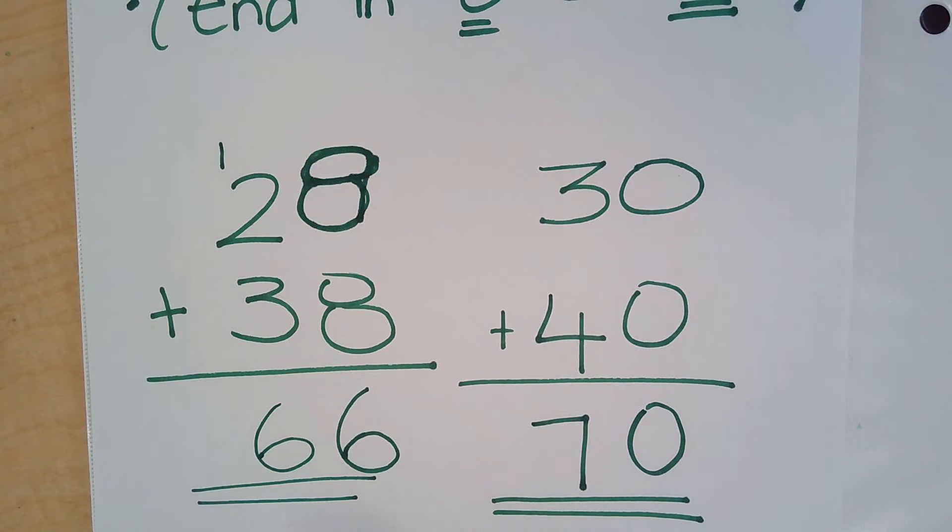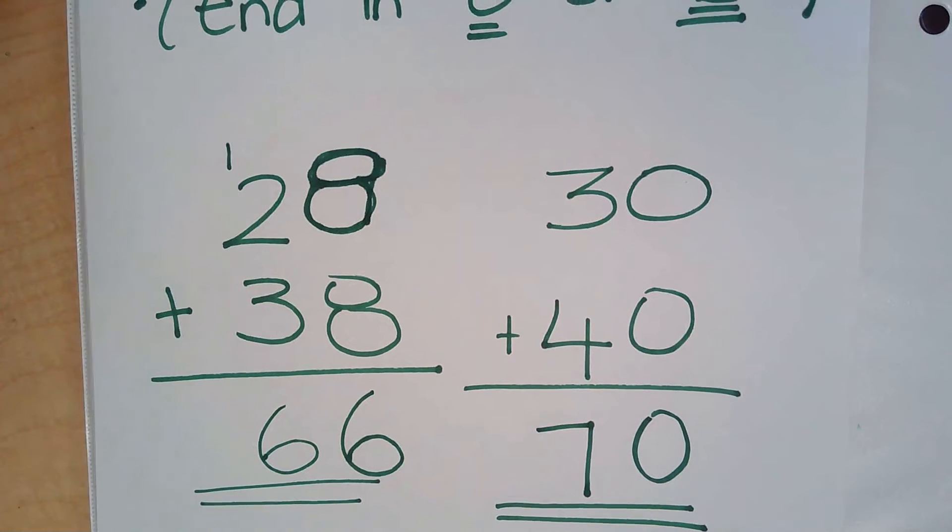What does this tell us? That our exact number needs to be very close to our compatible. Our exact needs to be close to our compatible. So you can see why it makes sense for us to use compatible numbers, because 66 is about the same thing as saying 70. We have rounded up. But in this case, as I've said, we're not rounding. We're just using compatible numbers.